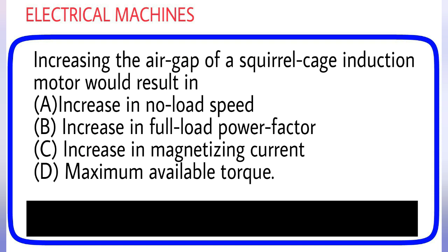Increasing the air gap of a squirrel cage induction motor would result in: (A) Increase in no load speed, (B) Increase in full load power factor, (C) Increase in magnetizing current, (D) Maximum available torque. Answer is option C.